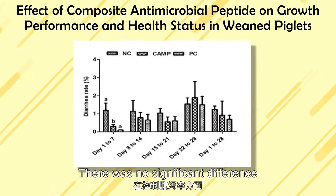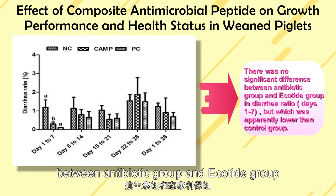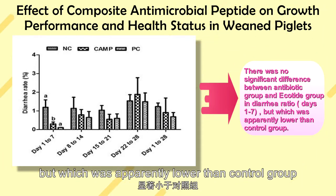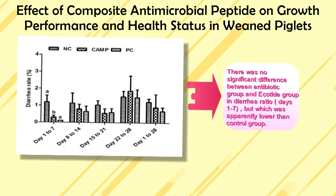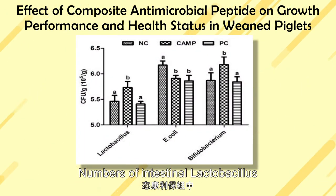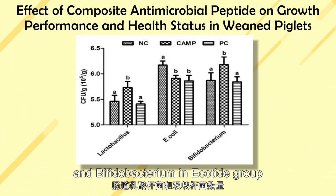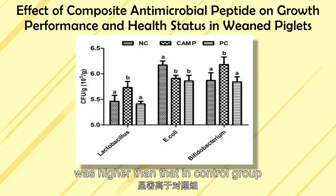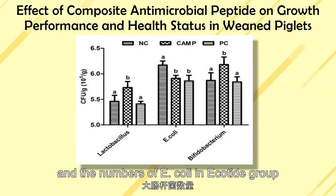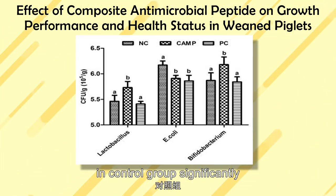There was no significant difference between the antibiotic group and the Equotide group in diarrhea ratio, but both were apparently lower than the control group. The numbers of intestinal Lactobacillus and Bifidobacterium in the Equotide group were higher than in the control group, and E. coli counts were significantly lower.